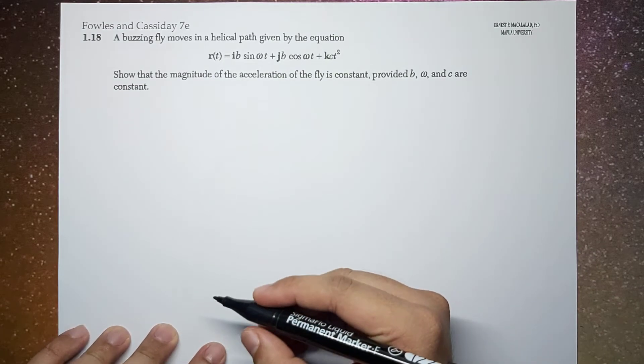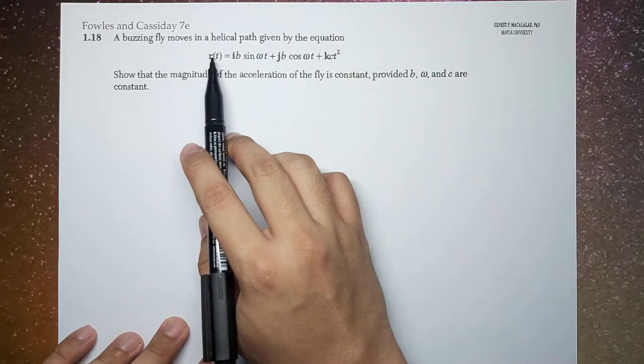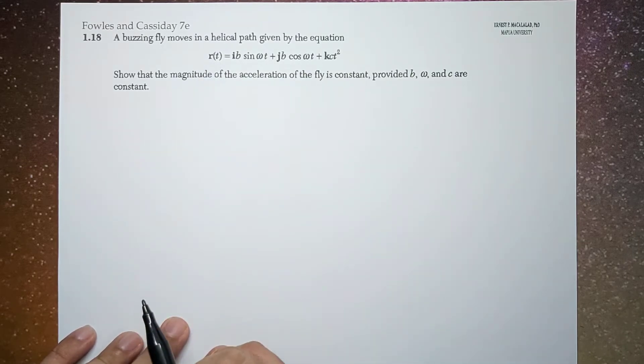So we already know that the acceleration is determined by taking the second derivative of the position vector r with respect to time.